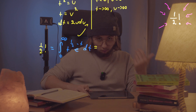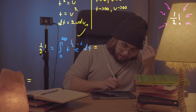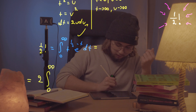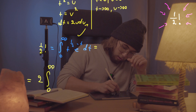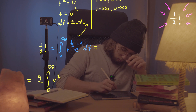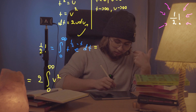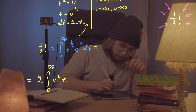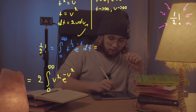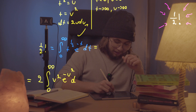After doing all of this substitution, what we get is 2 times the integral from zero to infinity of u squared times e to the power of negative u squared, du.